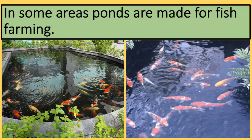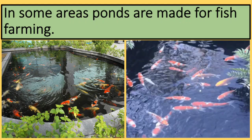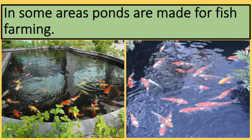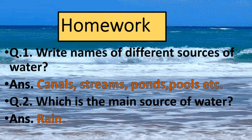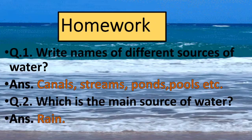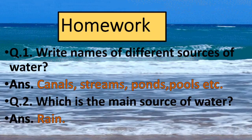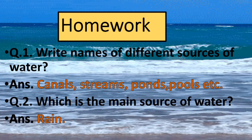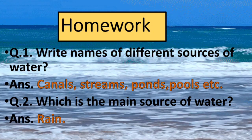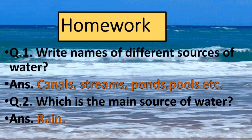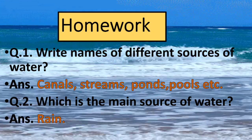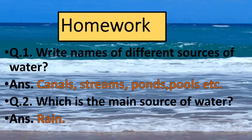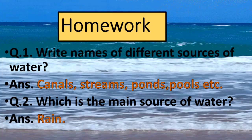So these were some different sources of water. Now note down your homework. You have to do these two questions in your notebook. Question number one: write names of different sources of water. You can write canals, streams, ponds, pools, etc. About rain and snowfall, you have already learnt — you can write that also. Question two: which is the main source of water? The answer is rain.